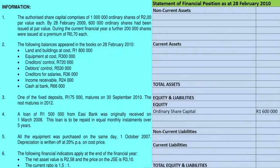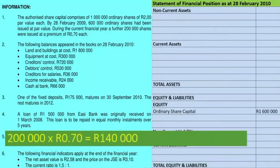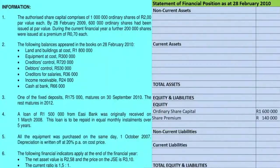Now let's record the share premium. We are told that the 200,000 shares issued during the current period were issued at a premium of 70 cents each. So we take 200,000 shares times 70 cents, which gives us a total of 140,000 rand. We record that under equity as well, as share premium: 140,000 rand.